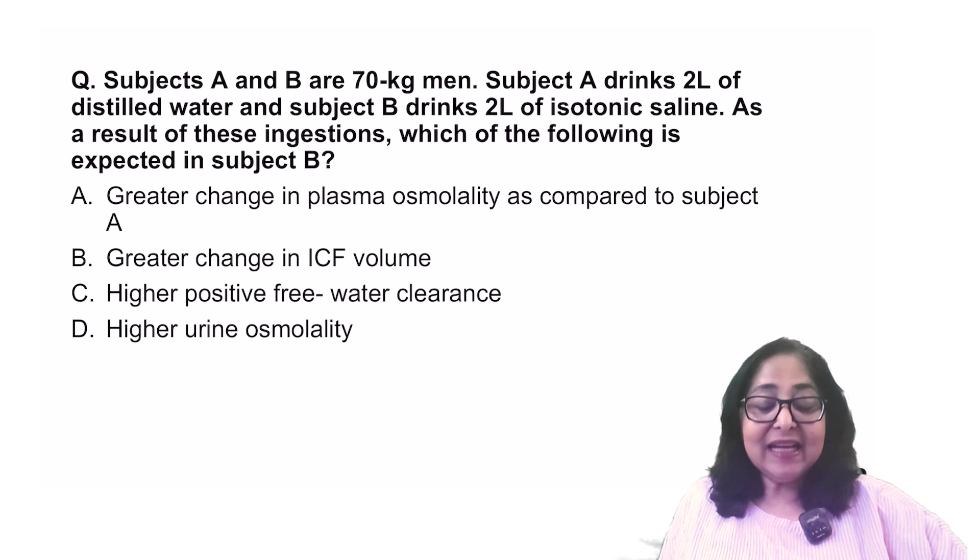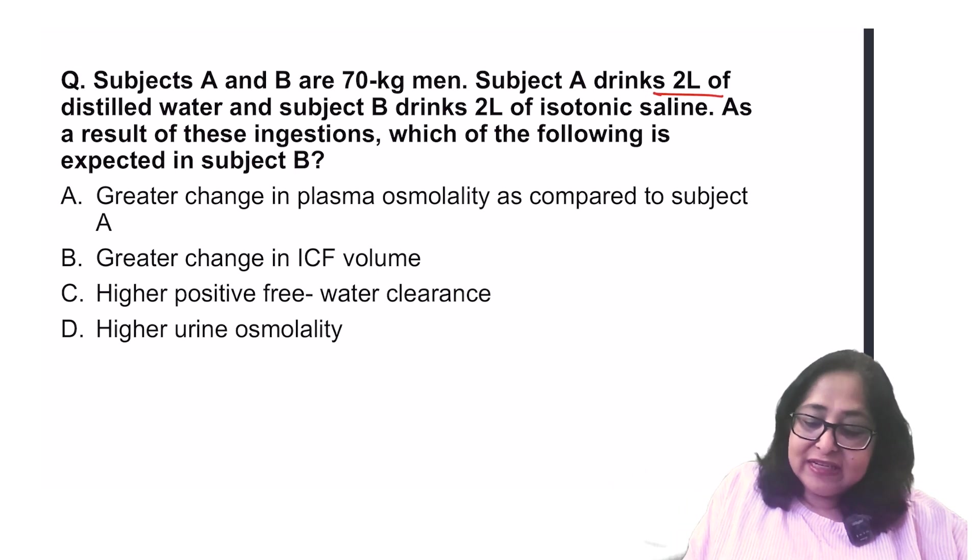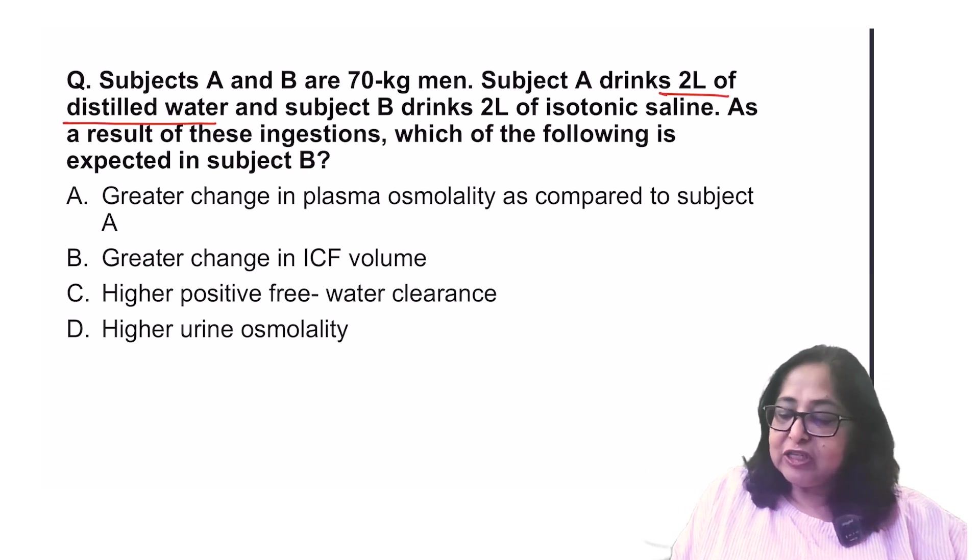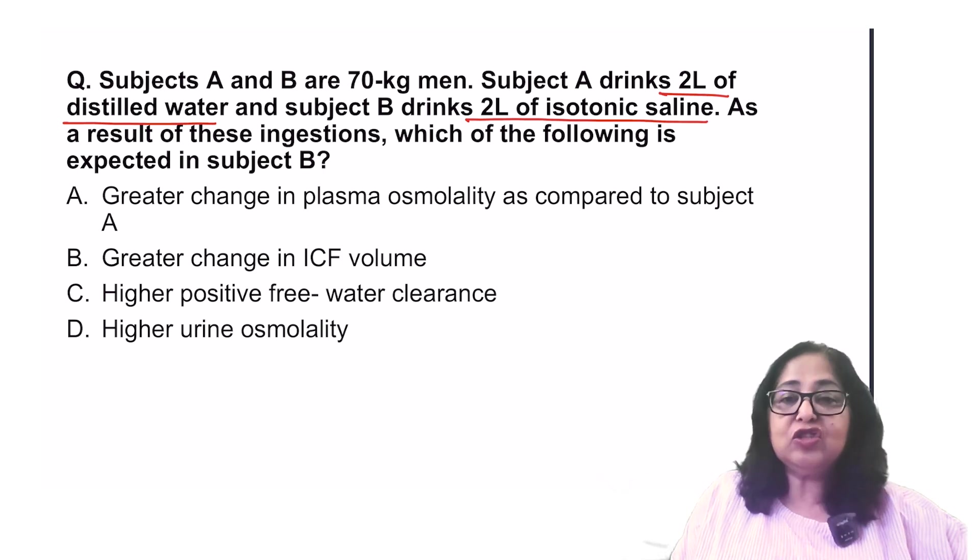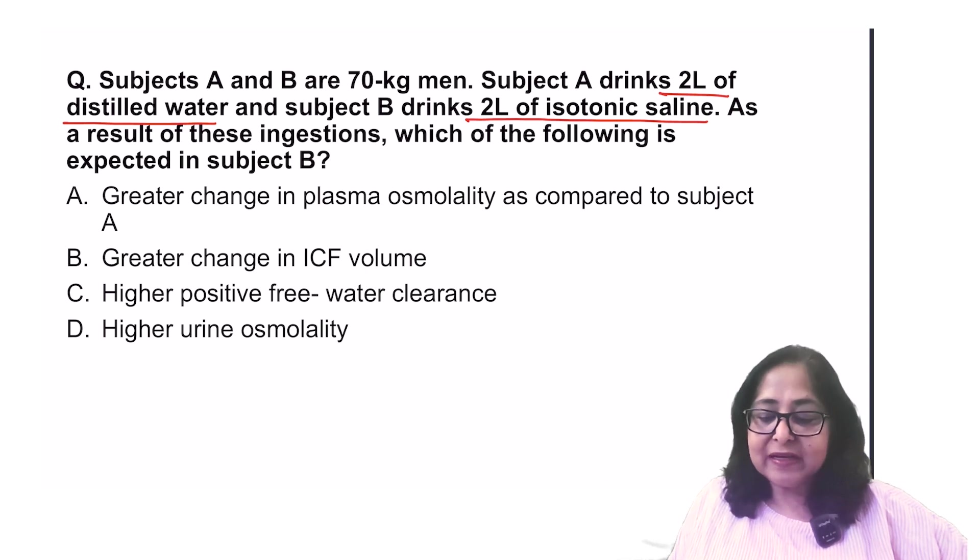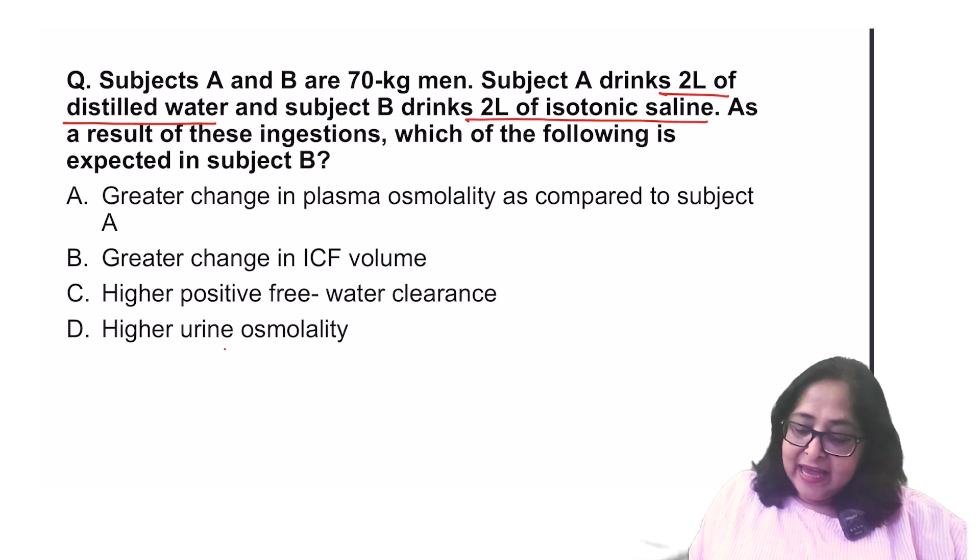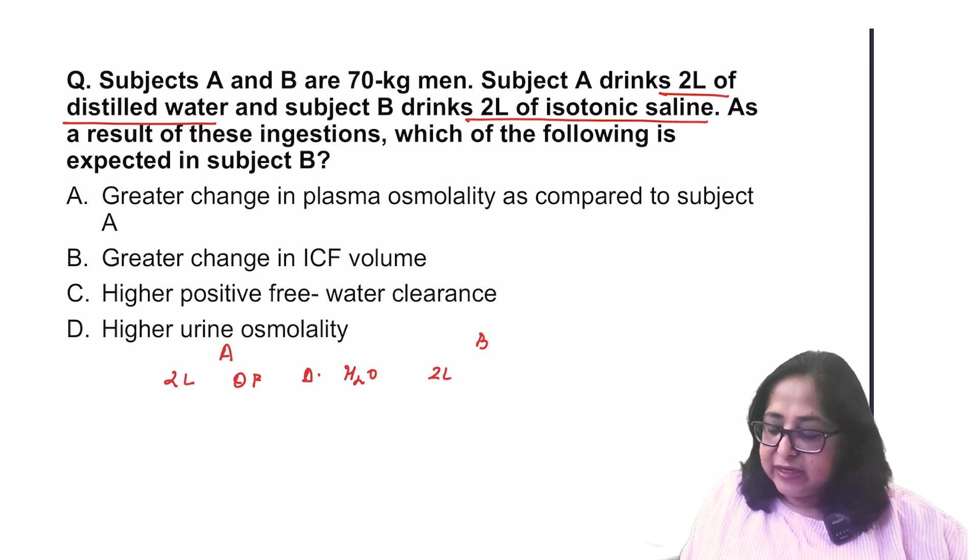Let's have a look at another interesting question. Subjects A and B are 70 kg men. Subject A drinks 2 liters of distilled water and subject B drinks 2 liters of isotonic saline. As a result of these ingestions, which of the following is expected in subject B? Now, A has 2 liters of distilled water and B drinks 2 liters of isotonic saline. So, the first thing is, please remember, whenever you add fluid into the body, it first goes to the extracellular compartment.